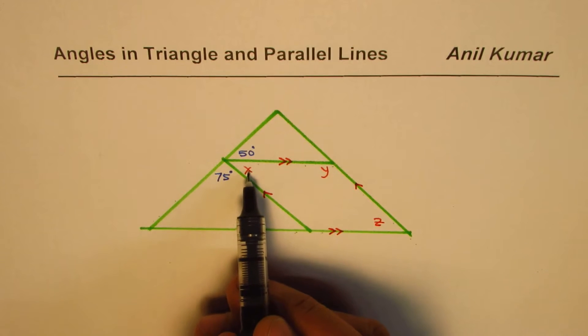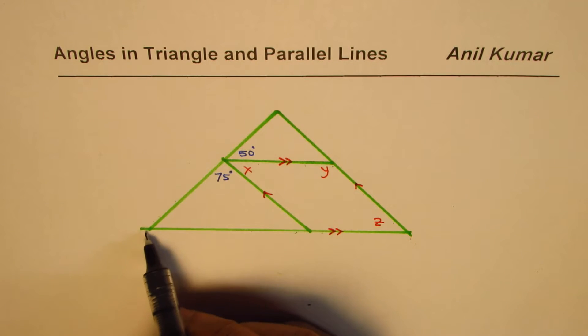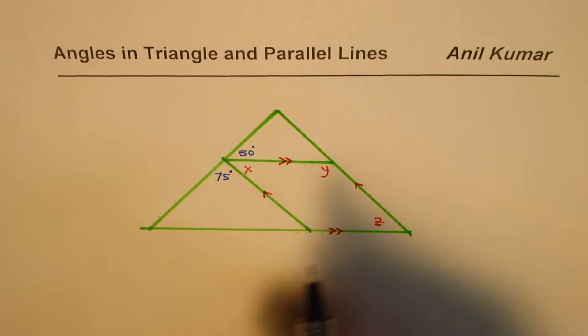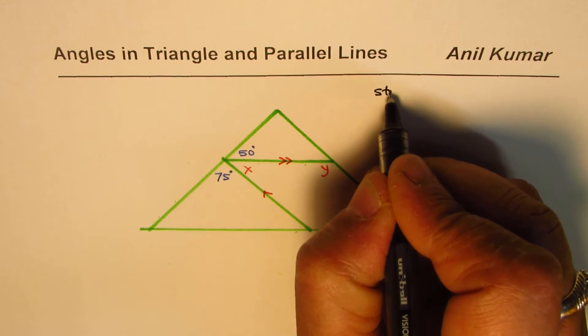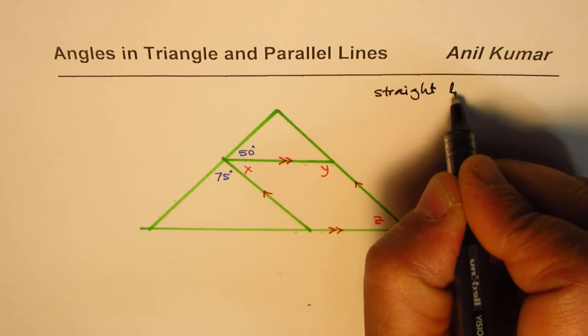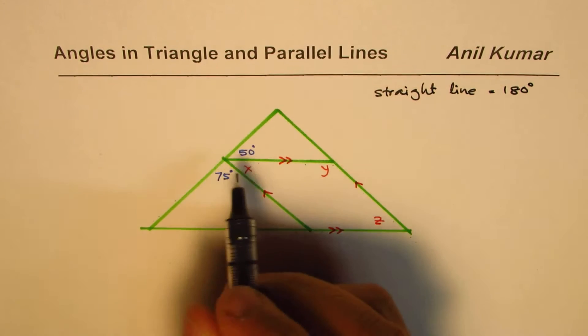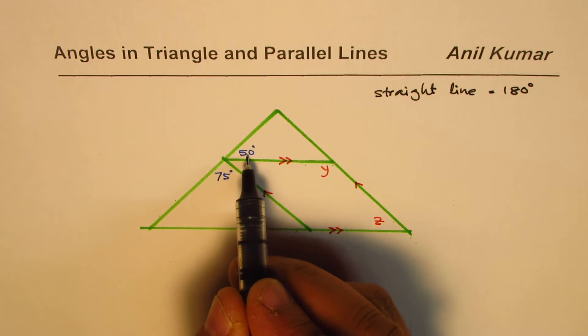To begin with, we could actually directly find angle x, since this is a straight line. A straight line always makes 180 degrees. So we know a straight line makes 180 degrees. So the sum of 75, x, and 50 is 180. So what is x?